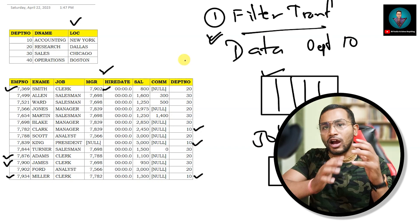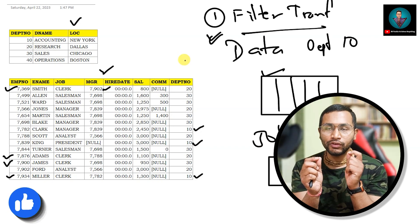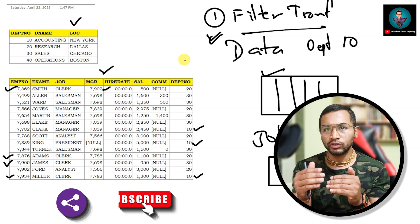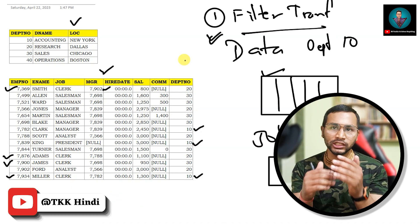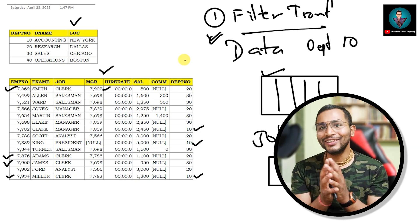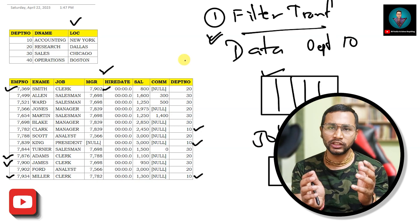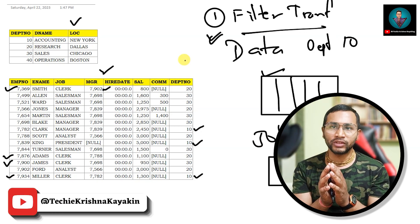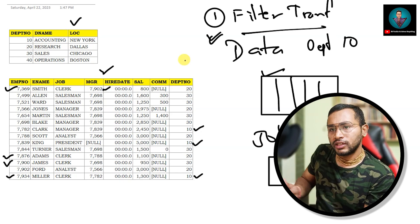For a word-by-word explanation of filter transformation, please read the description — I've given a detailed explanation there. We will discuss three or four types of transformation today, and if I get a good response on this video, I will make detailed videos on more transformation types applied in real-time projects.